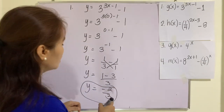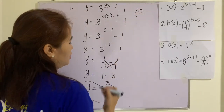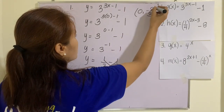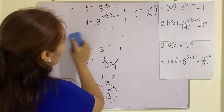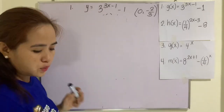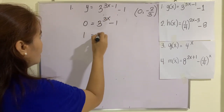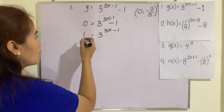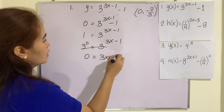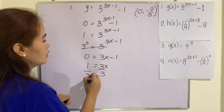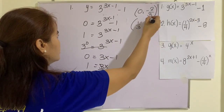Remember the y-intercept is a point that lies on the y-axis, so we represent it as the ordered pair (x, y): that is (0, negative 2/3). For the x-intercept, set y to 0: 0 equals 3 raised to (3x minus 1) minus 1, so 1 equals 3 raised to (3x minus 1). Writing both sides as base 3: 3 raised to 0 equals 3 raised to (3x minus 1), giving 0 equals 3x minus 1, then x equals one-third. So the x-intercept is (1/3, 0).